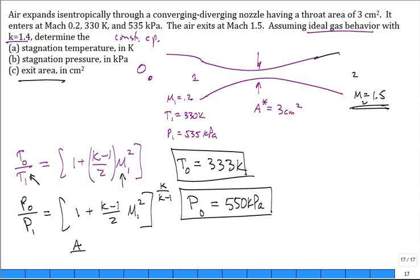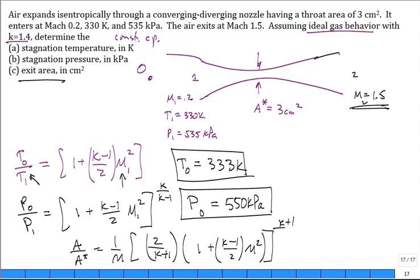Area divided by the throat area, or the critical area, 1 over the Mach number, 2 over k plus 1. Hey, we're not done with that equation yet. But 1 plus k minus 1 over 2 times the Mach number squared. Almost done. All of that raised to the k plus 1 power. Almost done. Don't stop yet. Divided by 2 times k minus 1. Now, just look at that equation. Do you think it's going to be easy to re-derive that? No. But we can use it knowing A star is 3 centimeters squared. And you calculate the area at the exit. The area at the exit 2. Do you think it's larger or smaller than 3 centimeters squared? It's larger. It's going to be larger. 3.56 centimeters squared.